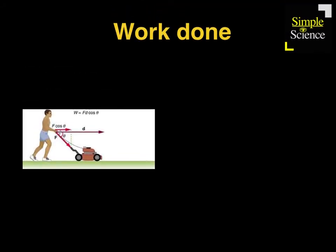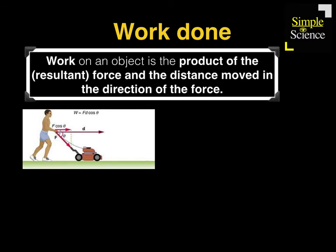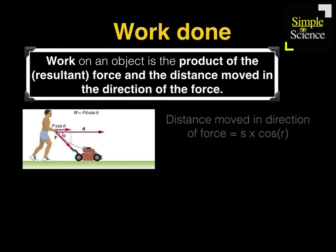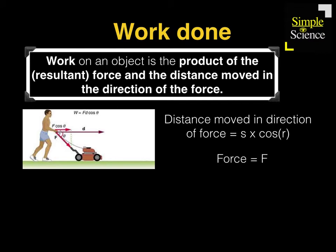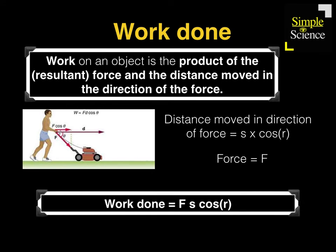Now let's get even deeper. Work done on an object is the product of the resultant force and the distance moved in the direction of the force. The distance moved in the direction of the force is S cos θ. Force is F, and work done by definition is F times S times cos θ, where θ is the angle. That's a very important equation in physics and everyone should know this.